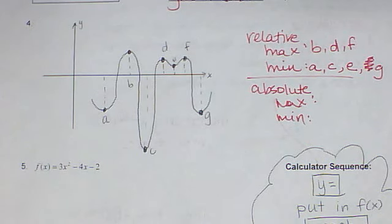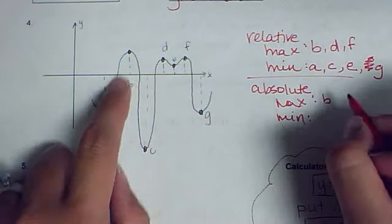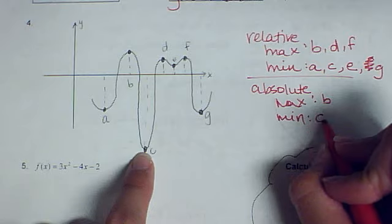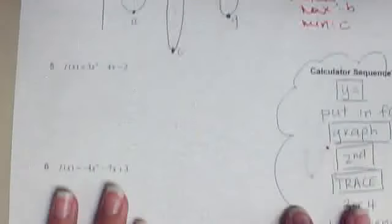Then we talk about the absolute maximum and minimum. That's the absolutely highest point and the absolutely lowest point on the graph. So where's the absolutely highest? Well, that's here at B. And the absolute lowest is C. And that's all there is to max and min.